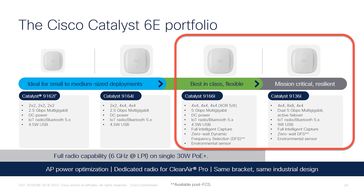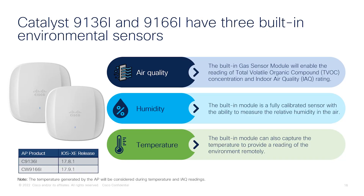Today I'll be going over how to utilize the Catalyst 9136 and 9166 built-in environmental sensors without DNA Spaces. The Catalyst 9136 and 9166 have three built-in environmental sensors that measure for air quality, humidity, and temperature.